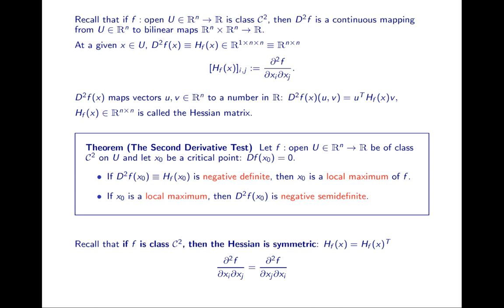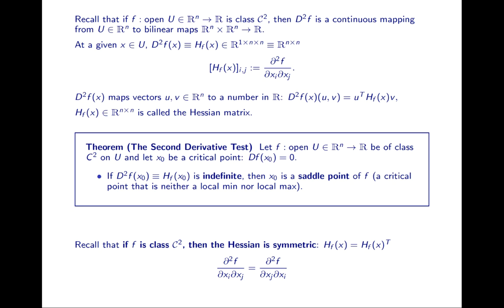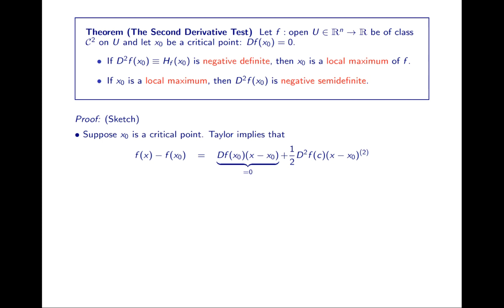Recall that if f is class C2, the Hessian is a symmetric matrix. If the Hessian is positive definite, x0 is a local minimum, and if x0 is a local minimum the Hessian is positive semi-definite. If the Hessian is indefinite — neither positive definite nor negative definite — then x0 is a saddle point, a critical point that's neither a local min nor max. Let's prove the local max version of the second derivative test, or rather give a sketch of the proof.